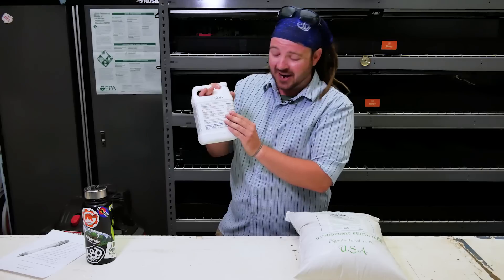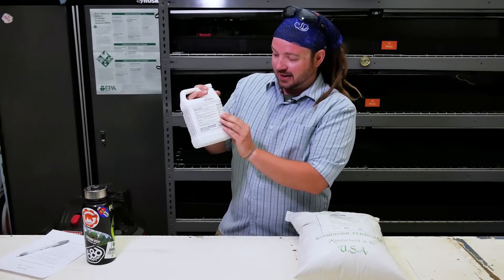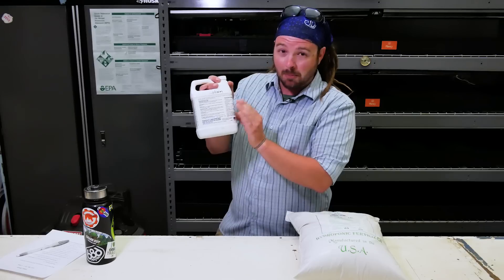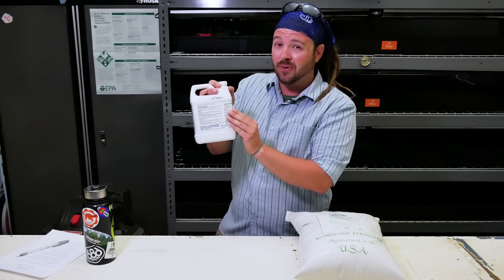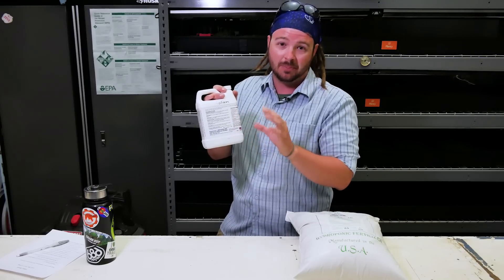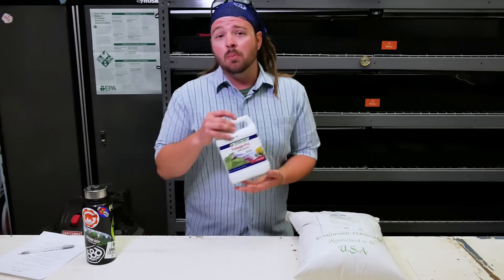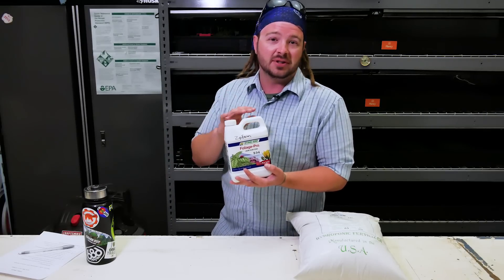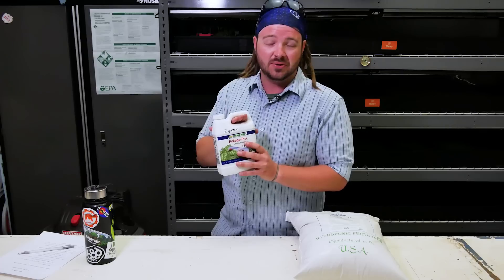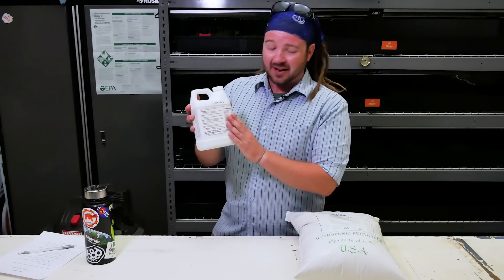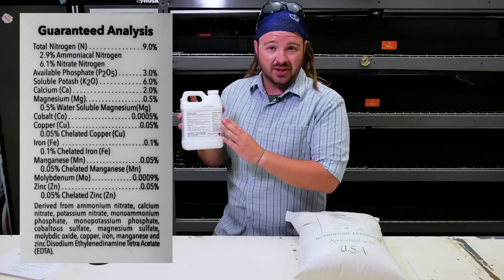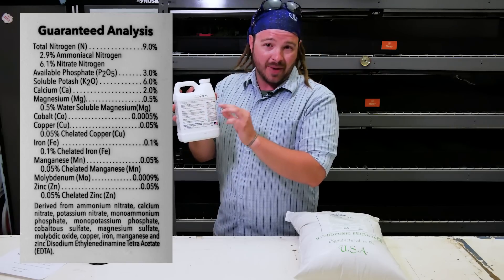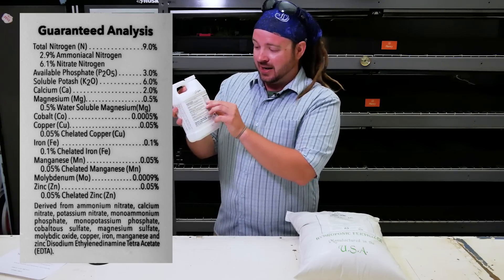For example, if you look at phosphate, it is listed as the phosphate molecule, not pure elemental phosphorus — P2O5 is the actual molecule that plants are using to take up. An important thing to note is that there are several different sources for these nutrients. If you look on the back of this bottle of DynaGrow, for example, there are actually two sources that make up that 9% nitrogen.